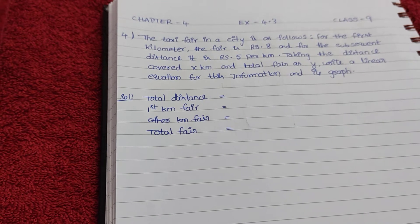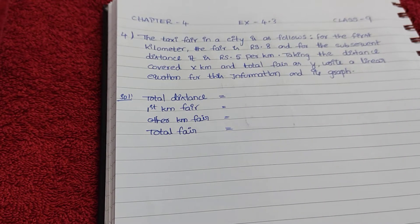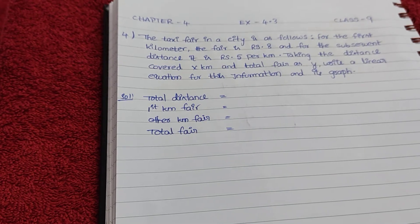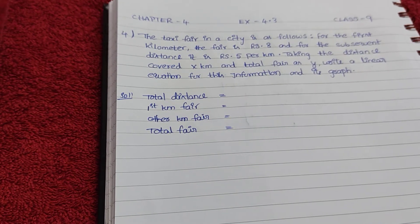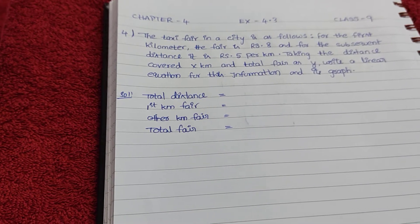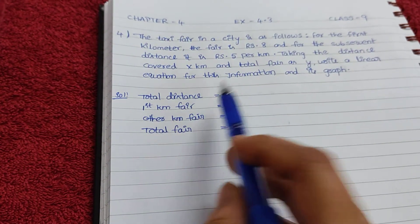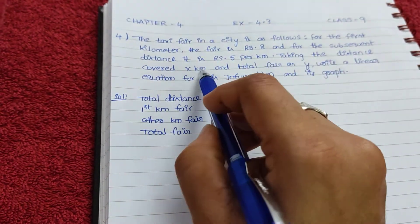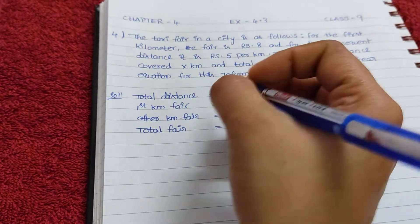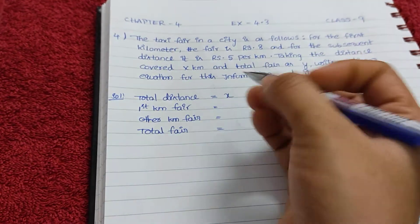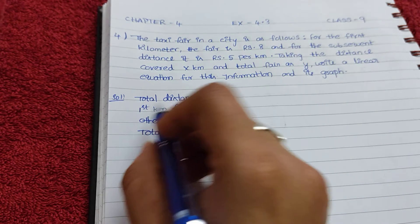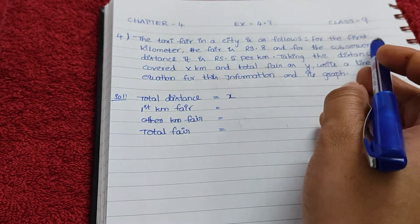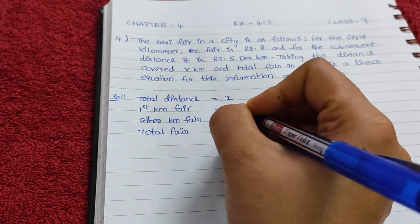Here they given first kilometer fare is Rs. 8 and subsequent distance per kilometer is 5. Now we have to find out the linear equation and its graph. Here I wrote total distance. What is total distance? They're taking the distance covered as x kilometer, so total distance is x.